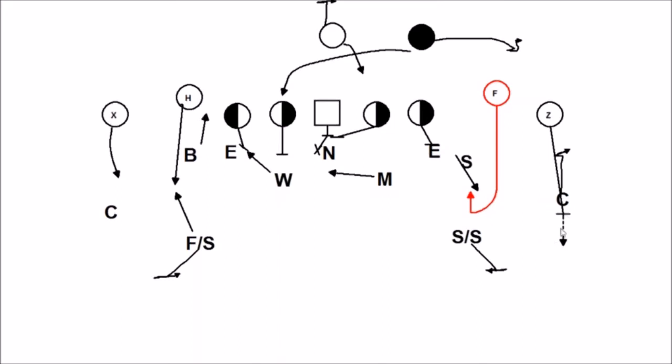Or you could play not man under, but you could play just pure two-deep with the two corners rolled up as we have in the picture, and the free and the strong on the hash, the two outside backers underneath in the hook curl zone underneath. And you have a two-deep look. So you can play, or you can play quarters. You can play basically any four across defense you want in this, in a balanced set like this. So unless it's an RPO look, they'll play normal coverage.